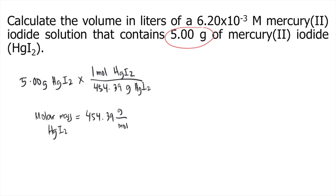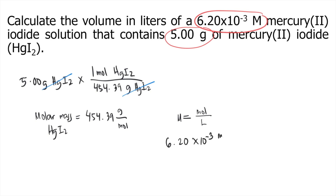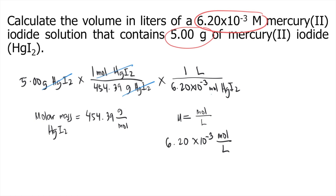The grams of HgI₂ cancel out, leaving us with moles of HgI₂. Another given in the problem is the molarity of the solution, which is 6.20×10⁻³ molar. Molarity is just moles per liter, so the concentration can be expressed as 6.20×10⁻³ moles per liter — meaning every 1 liter of solution contains 6.20×10⁻³ moles of HgI₂, and the moles of HgI₂ cancel out.